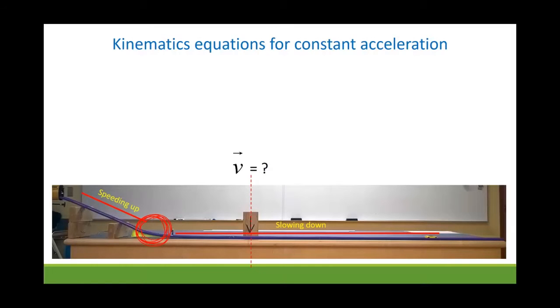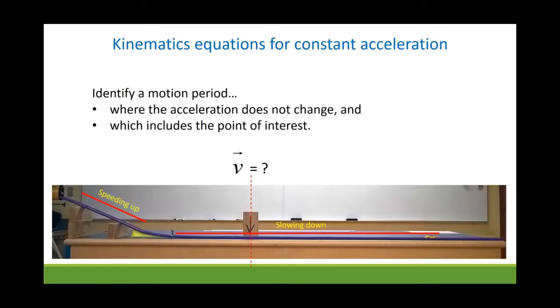In order to use our kinematics equations, we have to first of all identify a period of motion where the acceleration is constant, where it changes speed at a constant rate. And of course, that part of the motion has to include the point of interest, the area where we want to find the velocity of the car.